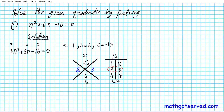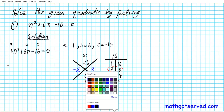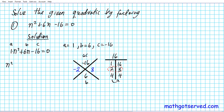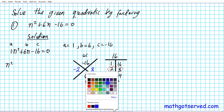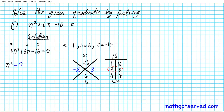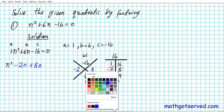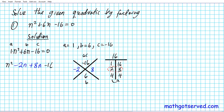Now we insert those two numbers into our quadratic trinomial, replacing the middle term. For the sum to be positive 6 and the product to be negative 16, the smaller number must be negative. So we rewrite the expression as: n squared minus 2n plus 8n minus 16 equals 0.